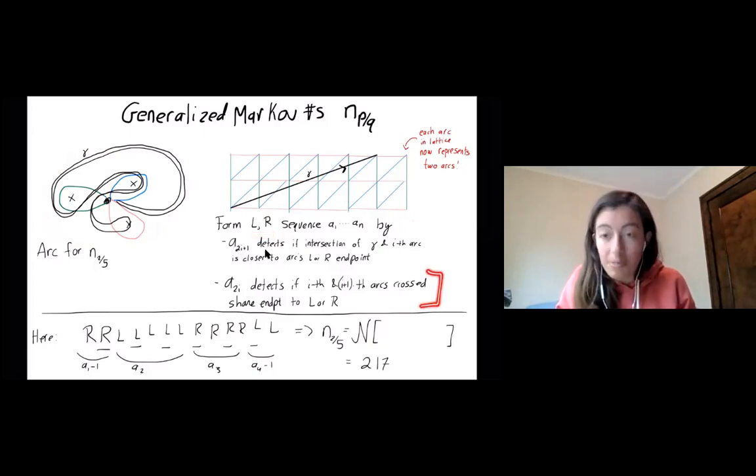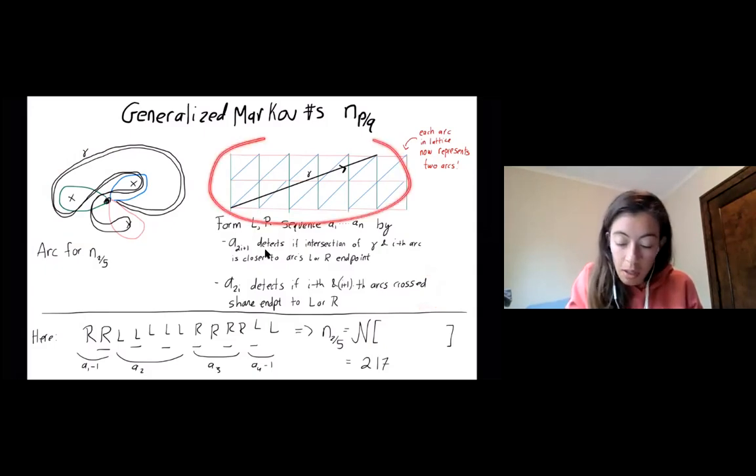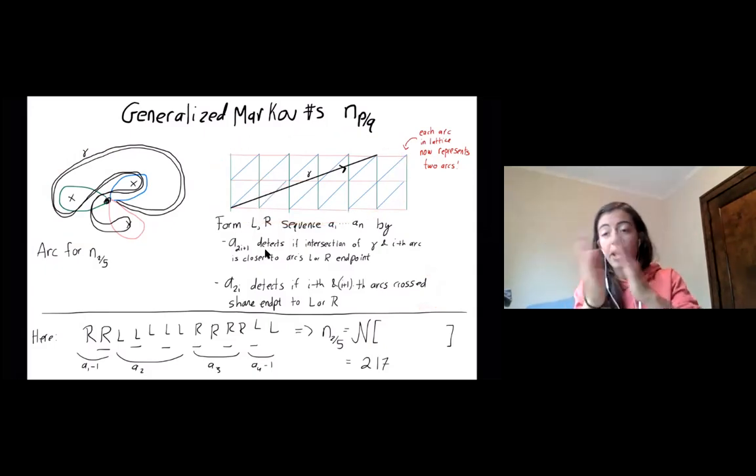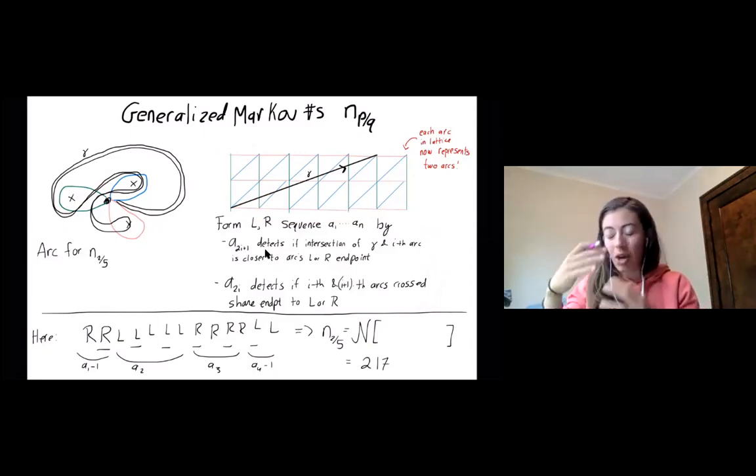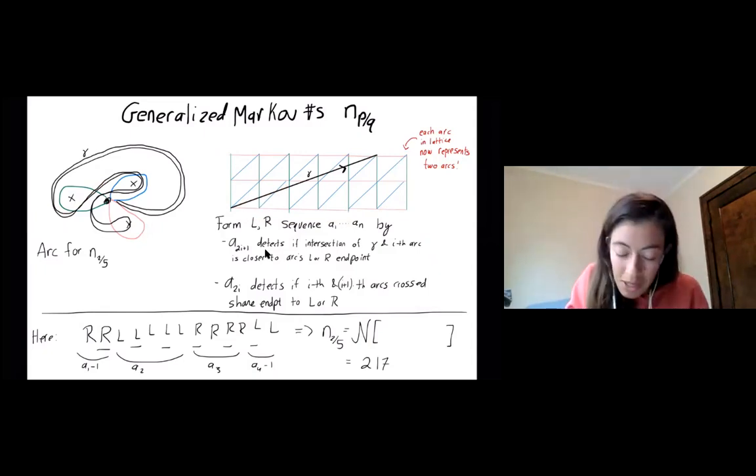So I can form the same LR sequence, where sometimes I'm still just keeping track of in here, if the arcs I cross share a vertex to the right or left. But I also have to take account for the fact that each of these really, again, represents two arcs, because you can see here how I have two crossings in a row of green. So to do that, it's not like hard math, but it just gets a bit complicated. You keep track of whether the intersection of your arc with, like your extra arc gamma, with your arc from the triangulation is closer to the right or left.